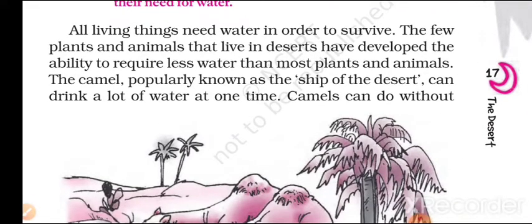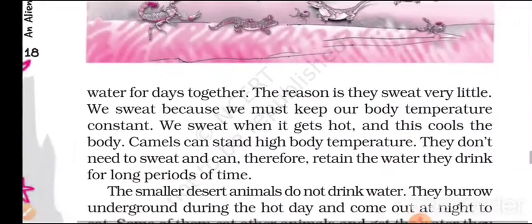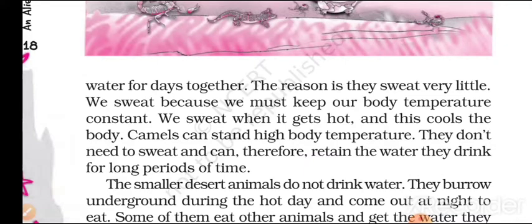All living things need water in order to survive. The few plants and animals that live in deserts have developed the ability to require less water than most plants and animals. The camel, popularly known as the ship of the desert, can drink a lot of water at one time. Camels can do without water for days together — the reason is they sweat very little. We sweat to keep our body temperature constant; this cools the body. Camels can stand high body temperatures, so they don't need to sweat and can therefore retain the water they drink for long periods of time.